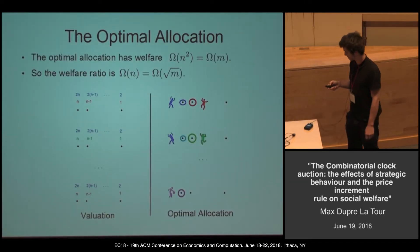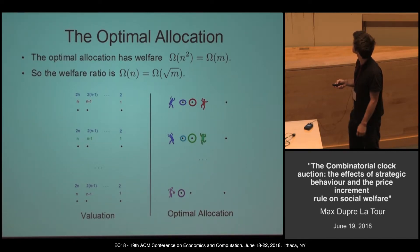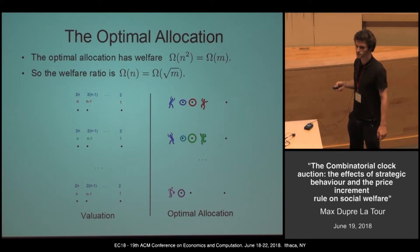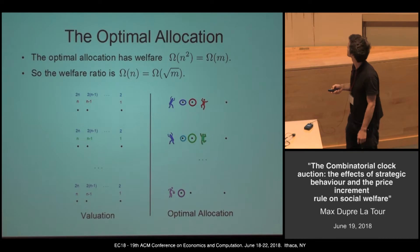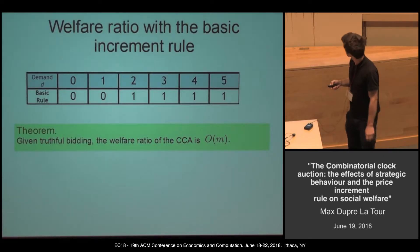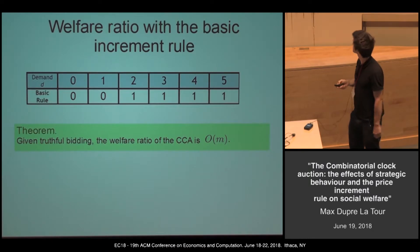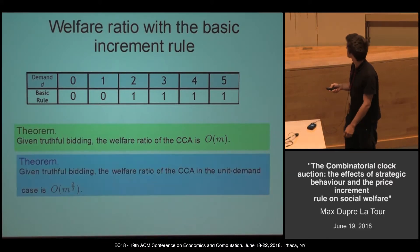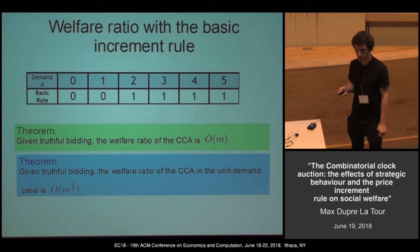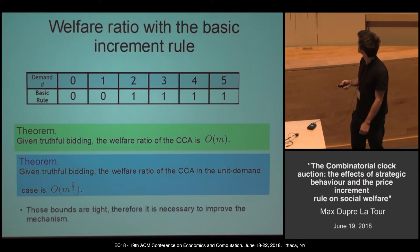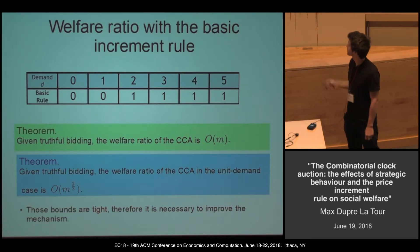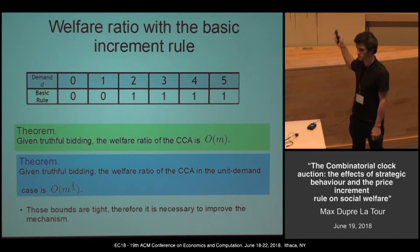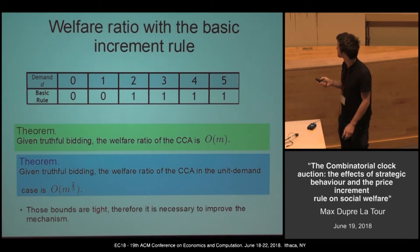This is a really bad example, but we can actually do worse. This works not just for the basic increment rule, but for any rule such that the price rises only under excess demand. We still have some welfare guarantee with the basic rule: in the general case the welfare ratio is at most M, and in the unit-demand case the welfare ratio is at most M^(2/3). Those two bounds are tight. The first theorem is quite easy, but the second is one of our main results.